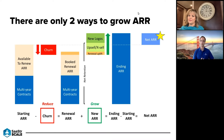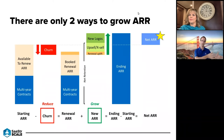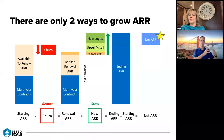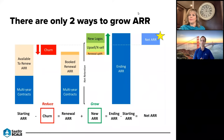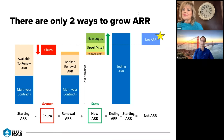Churn is measured against that starting ARR, which gets you down to what we call renewal ARR. We then add on any incremental new ARR, which has two main components: it either comes from existing customers through upsell or cross-sell, or from new logos. There's also a renewal uplift — for instance, if a renewal grows from $100K to $102K due to a cost-of-living adjustment, that uplift gets calculated as new ARR. Renewal ARR plus new ARR gives you your ending ARR.